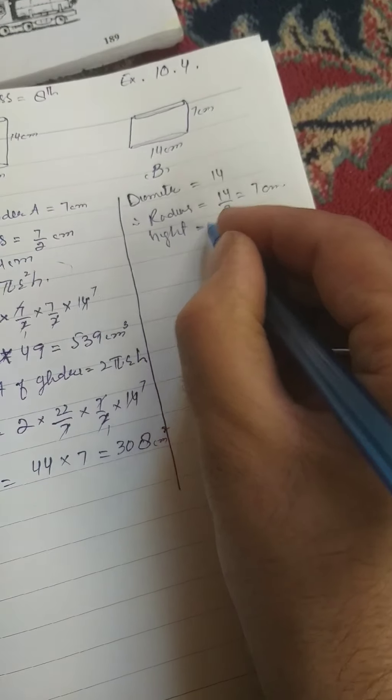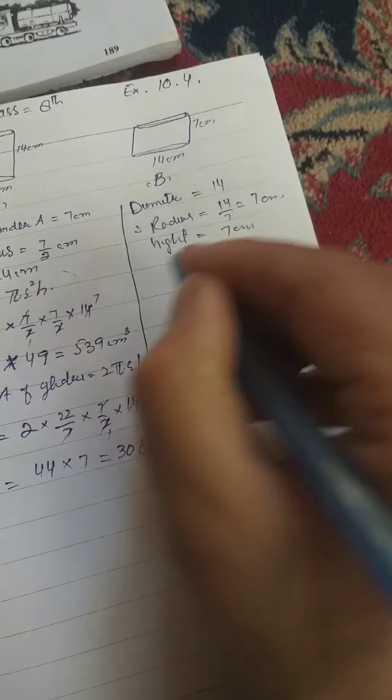So height given is 7cm. We will see the volume formula of πr²h where π is equal to 22 divided by 7.